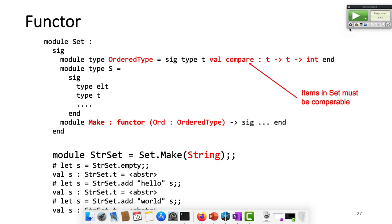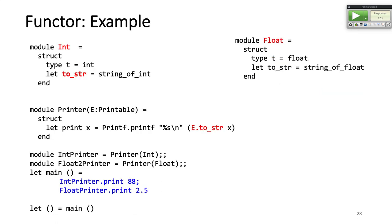The functor is a function that takes another module and returns a module — that's what we call a functor. Here's an example. I have this printer. It's difficult to come up with a small example because a functor has multiple working parts.